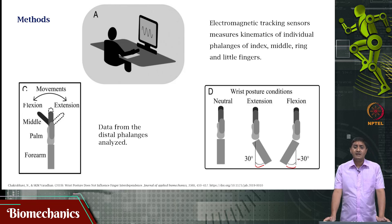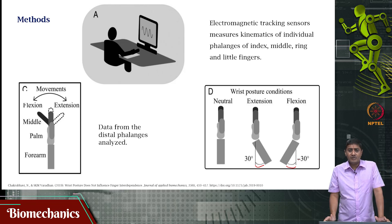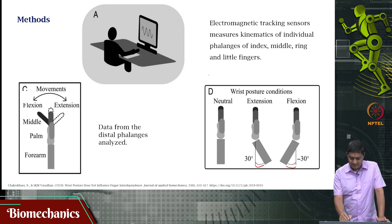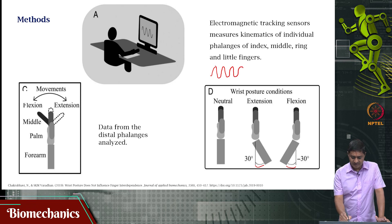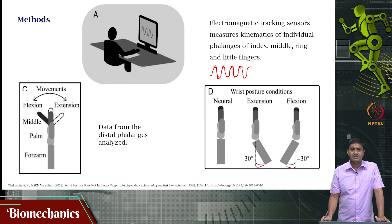The task was to follow a metronome and move the instructed finger in a cyclical fashion, such that for every tick of the metronome, you are either at the top or at the trough of the sinusoid. Data was collected for 30 seconds per trial, and we collected 3 or 4 trials per condition.